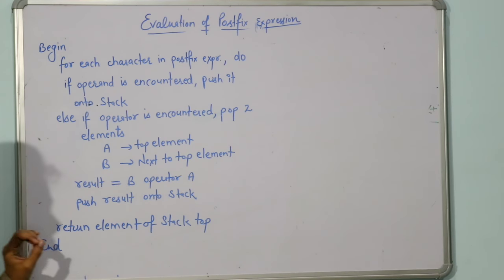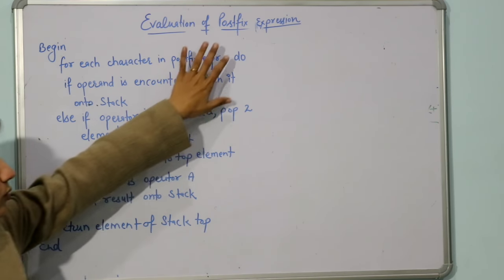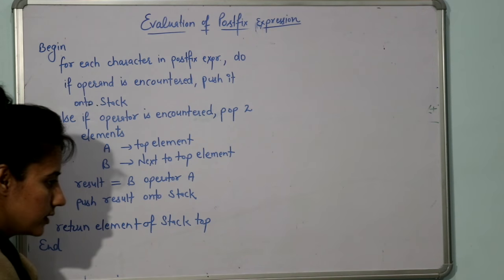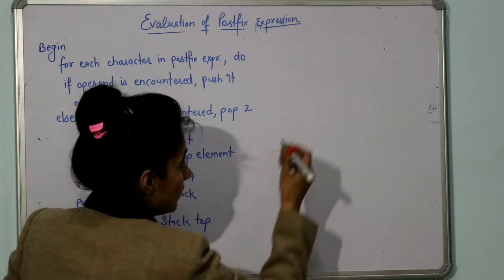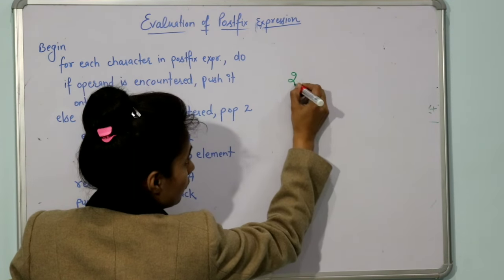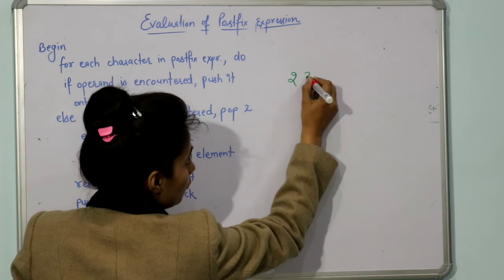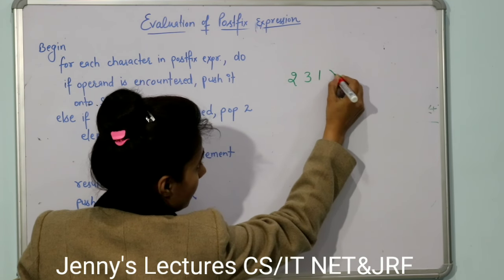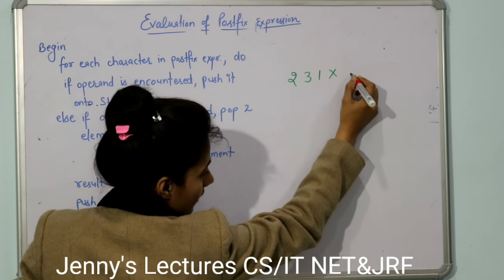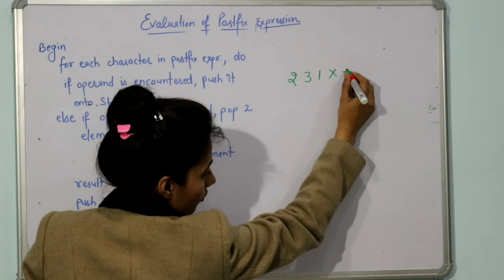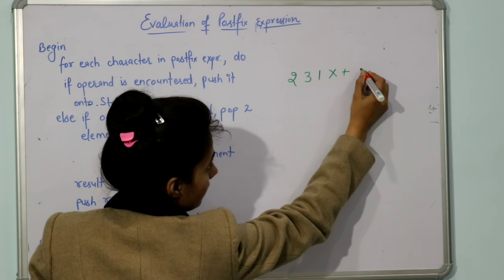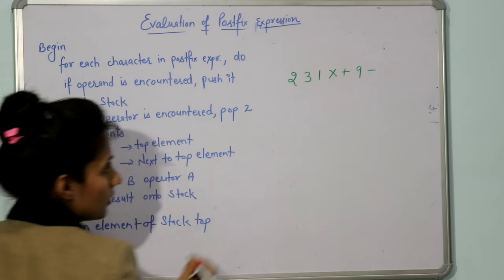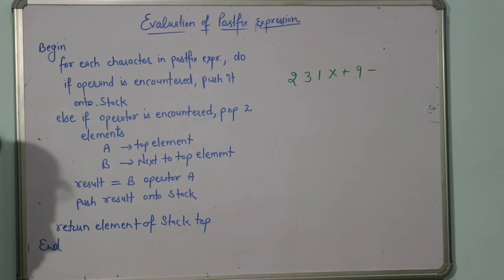First of all, suppose we have one postfix expression. Let us take a simple example: 2, 3, 1, then we have a multiplication operator, then we have plus, then we have 9, then suppose we have minus. This is the example.